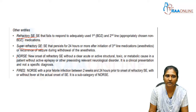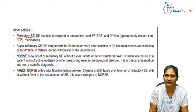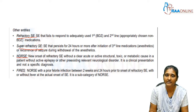There is one more terminology called NORSE — new onset refractory status epilepticus — where there is no clear etiology to explain why the child is having refractory status epilepticus. There is no active structural, toxic, or metabolic cause identifiable in the patient, and there is no pre-existing neurological disorder. New onset refractory status epilepticus is a clinical presentation rather than a specific diagnosis.